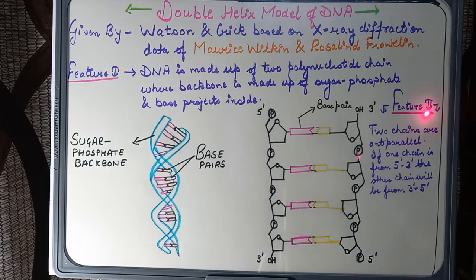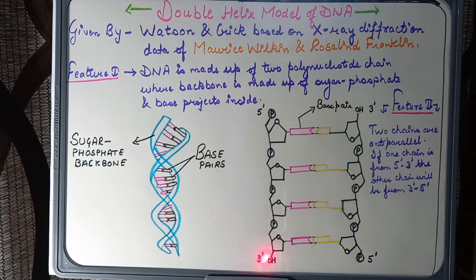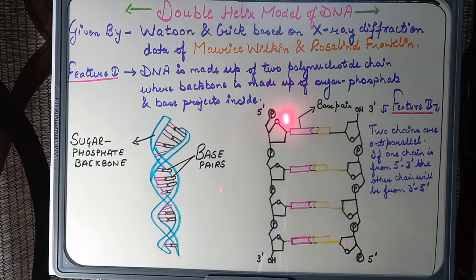Feature 2 states that the two chains are anti-parallel to one another. That means if one chain runs from 5' to 3', the other will run from 3' to 5'. As you can see in the diagram, on carbon number 5, phosphorus is attached — so this would be 5'. On the same chain, on carbon number 3, OH is attached — so this would be 3'. On the complementary chain, the arrangement is reversed, confirming the two chains are anti-parallel.